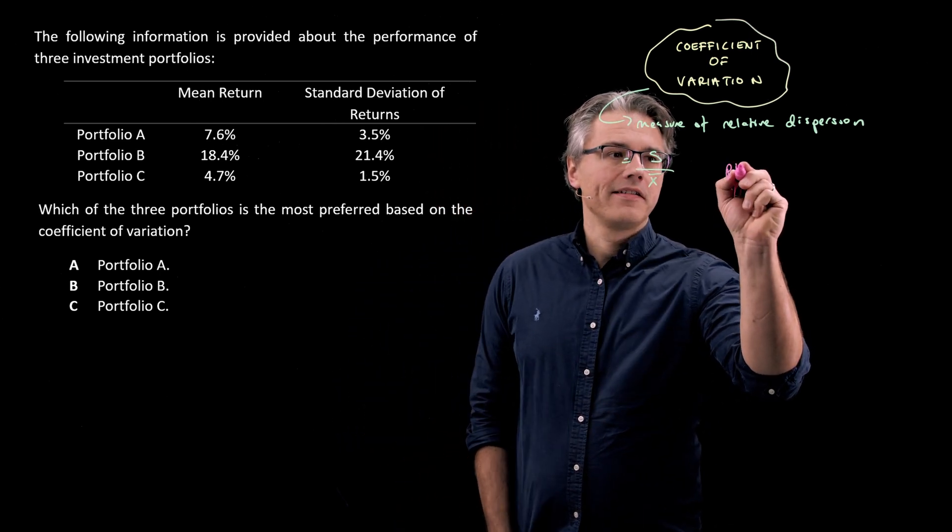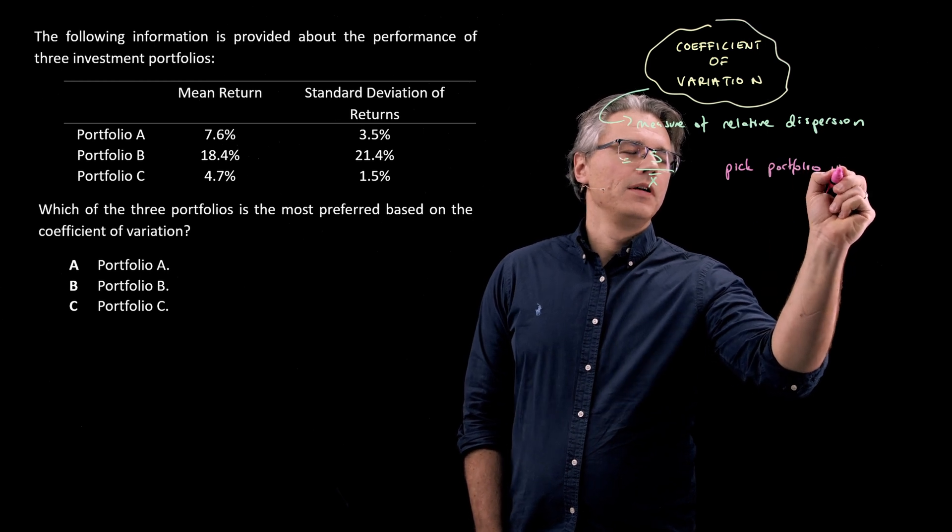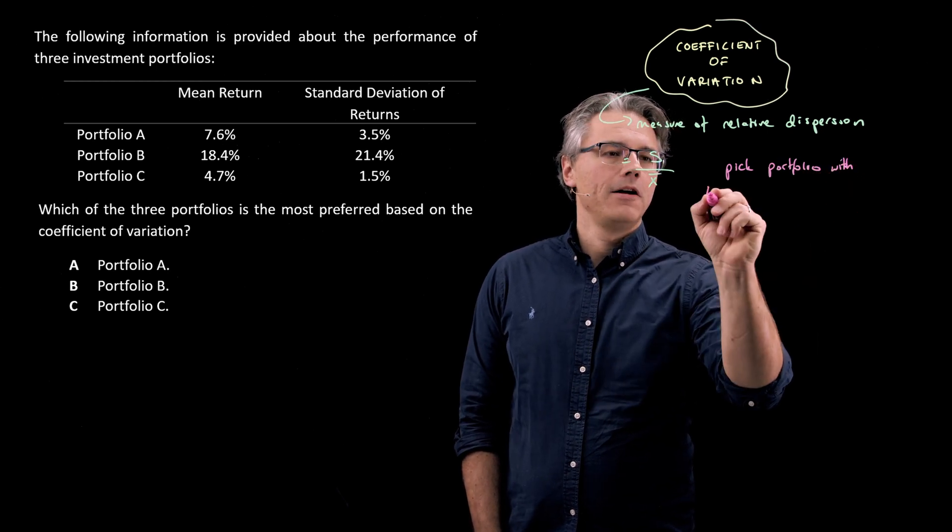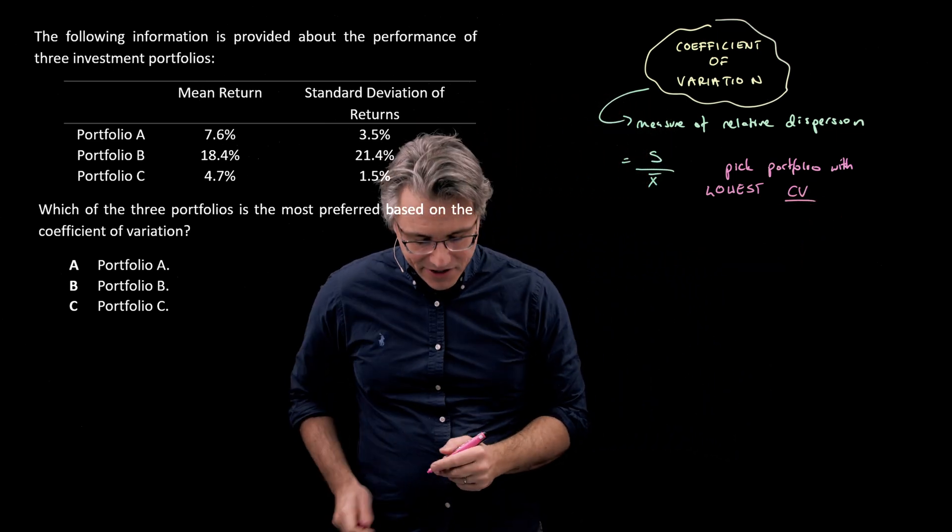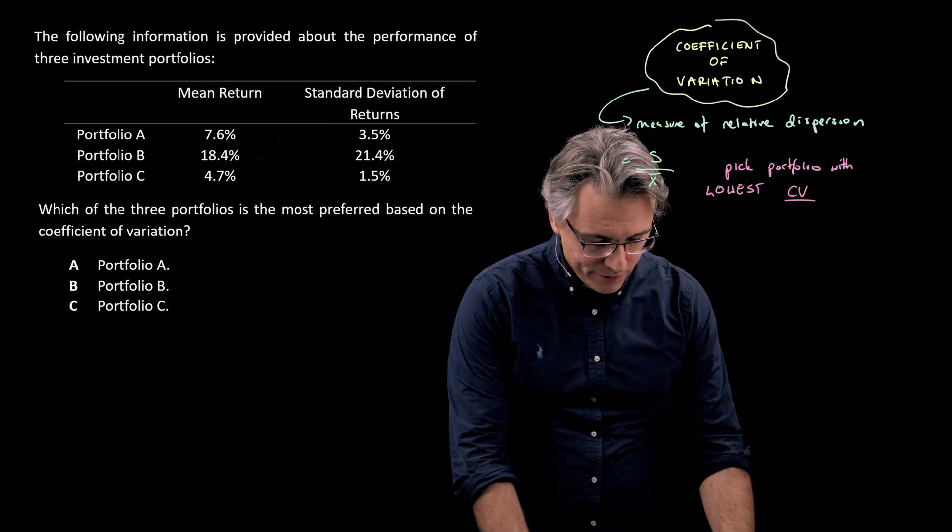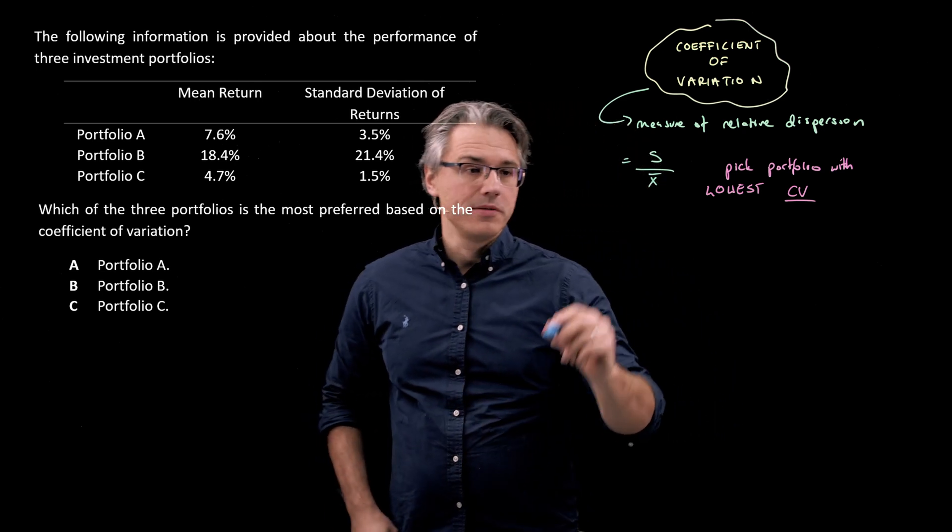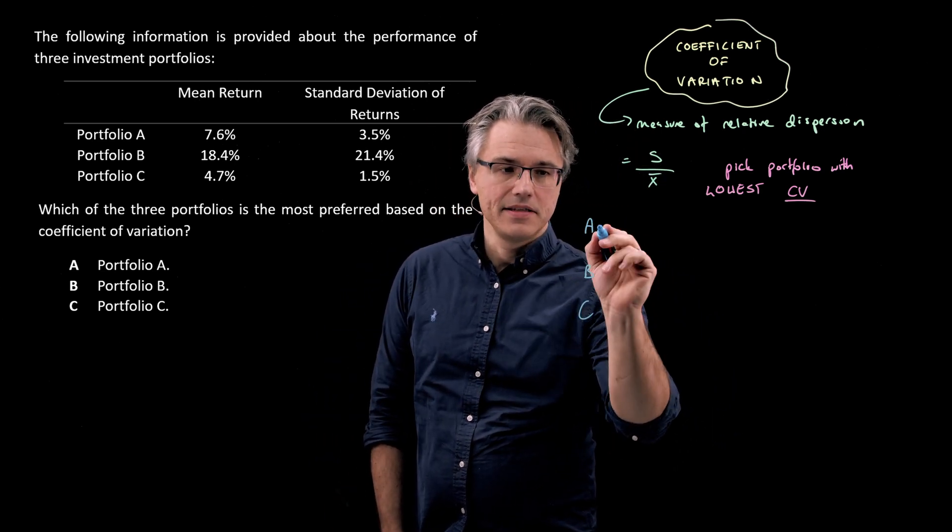So pick portfolio with lowest CV, coefficient of variation. Okay, let's do this for all three portfolios, A, B, and C.